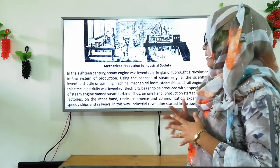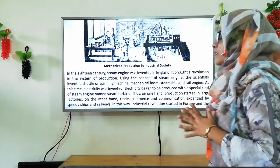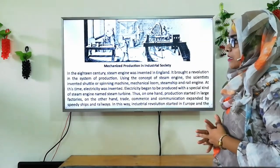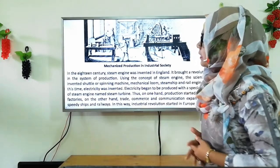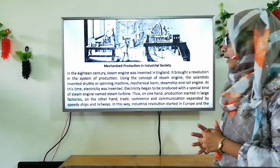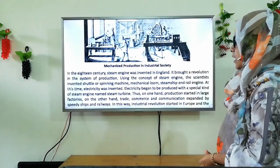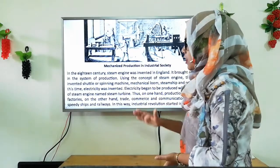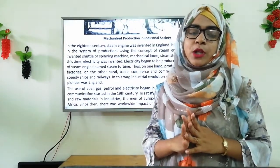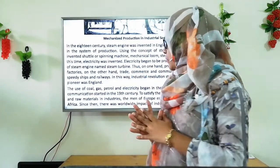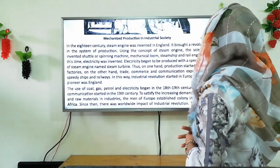In the 18th century, the steam engine was invented in England. It brought a revolution in the system of production. Using the concept of the steam engine, scientists invented the shuttle or spinning machine. Spinning machines and human employees produced consumer products. Other inventions followed: the mechanical loom, steam ship, and rail engine. At this time, electricity was also invented. Electricity began to be produced with a special kind of steam engine named the steam turbine.